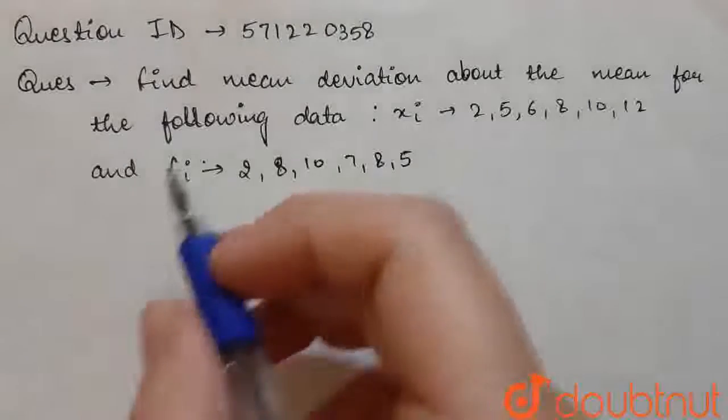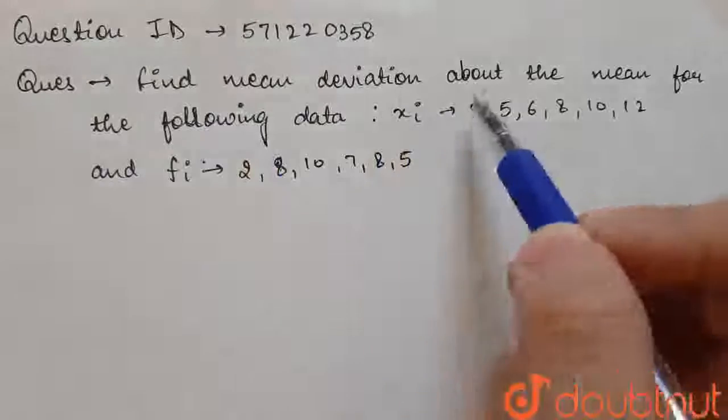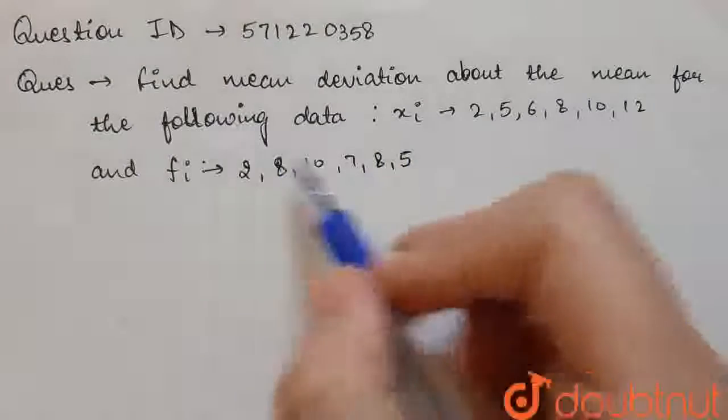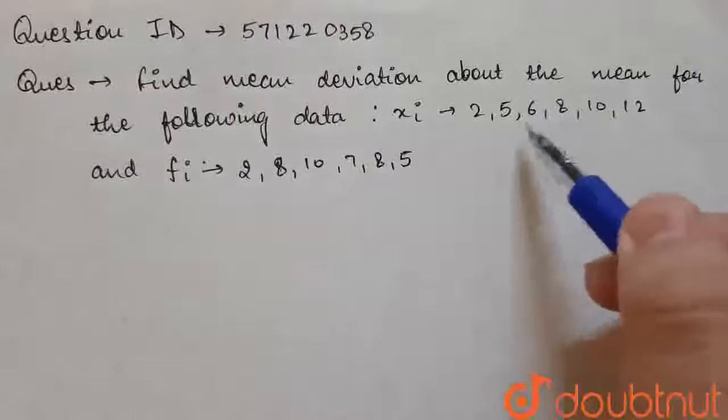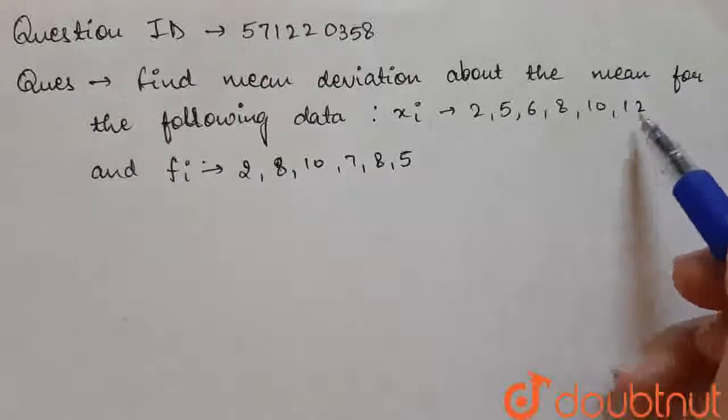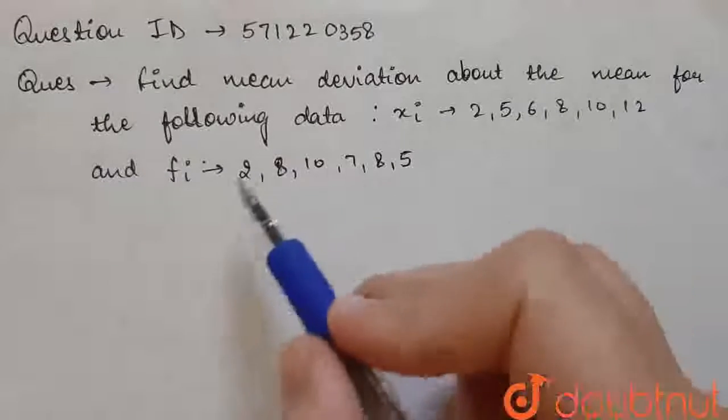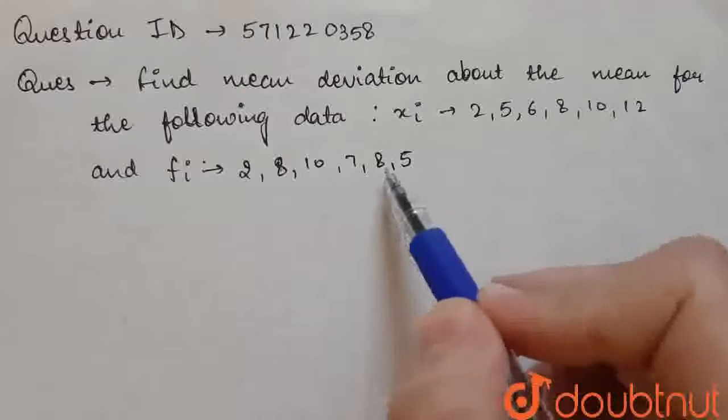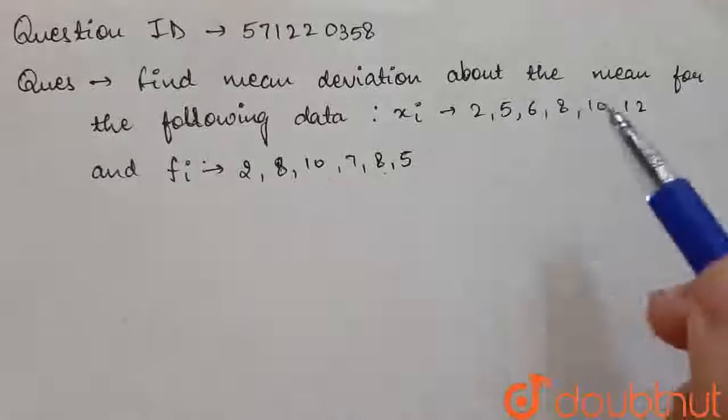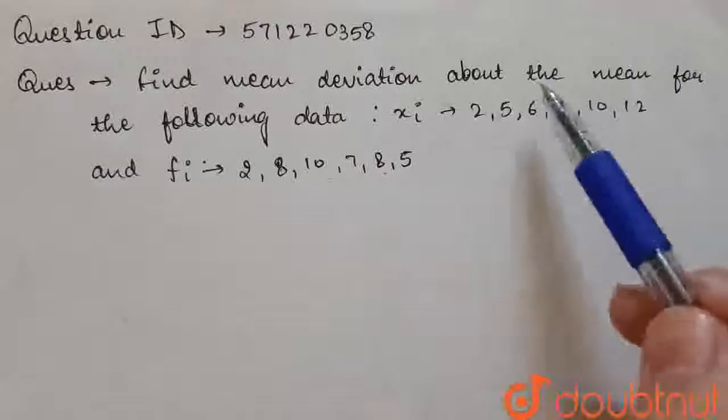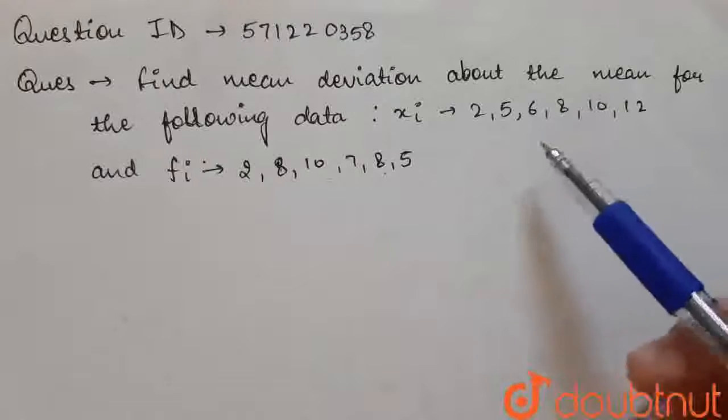Hello friends, our today's question is: find mean deviation about the mean for the following data. Xi is equal to 2, 5, 6, 8, 10, 12 and fi is 2, 8, 10, 7, 8, 5. So here, data is given to us, we have to find the mean deviation for this data about mean.